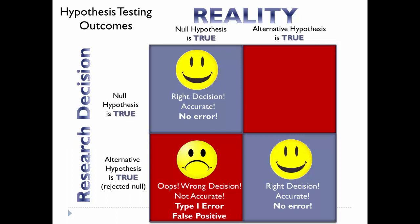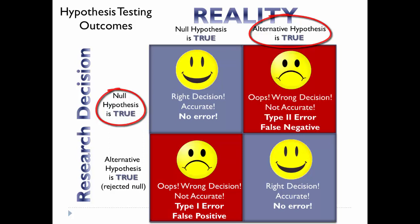But if the opposite were true — we concluded that we were just lucky to visit Disneyland on a low attendance day, accepting the null hypothesis, when in fact Disney's pricing did have an effect and the alternative hypothesis was indeed true — we would also be committing an error. In this case, a false negative, which is a Type 2 error.